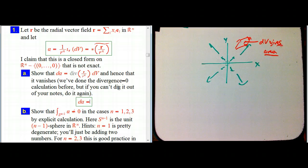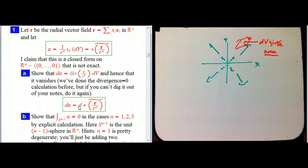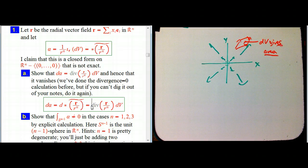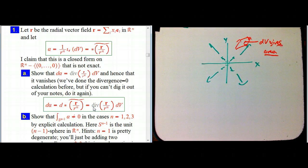We know there's this connection: d alpha is d of star of tilde of something, and we already know that d of star of tilde of a vector field replicates the divergence of the vector field. What you get is — d of an (N−1)-form is an N-form — and it's really star of div of that vector field, which is just the divergence times DV, because star of a scalar function is just multiplication by the volume form. So either way, in differential form terminology or in terms of divergence, we can calculate that this actually has vanishing divergence, or equivalently, this form is closed.